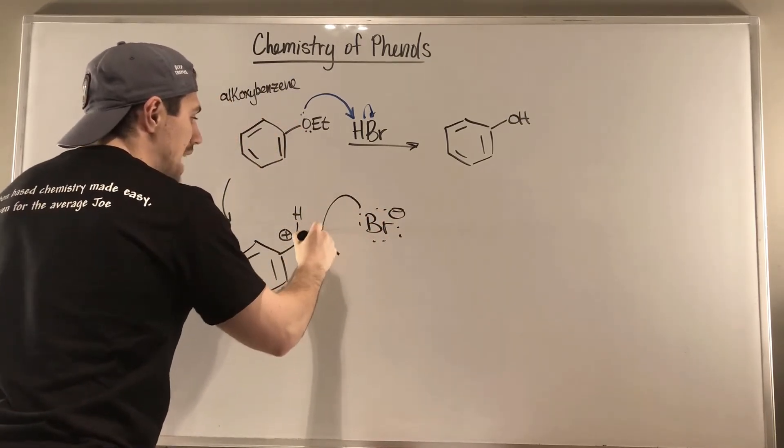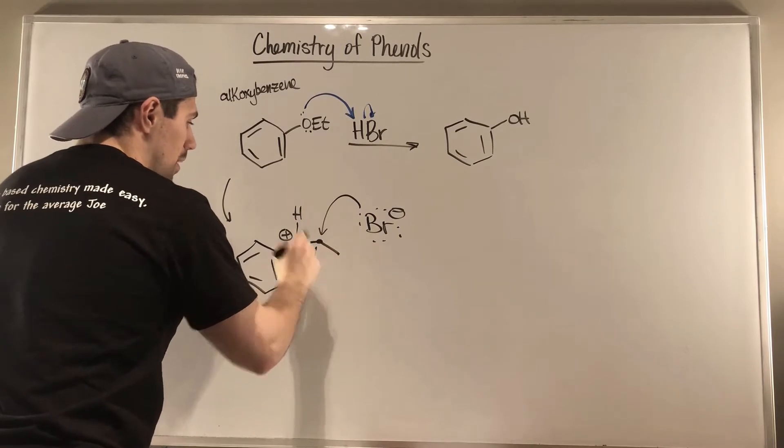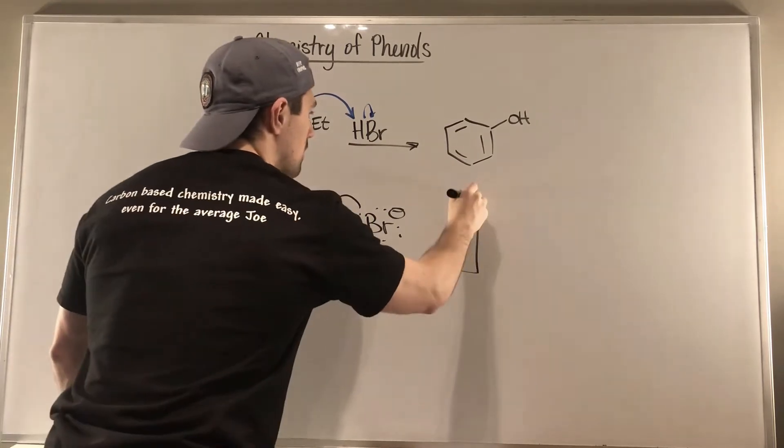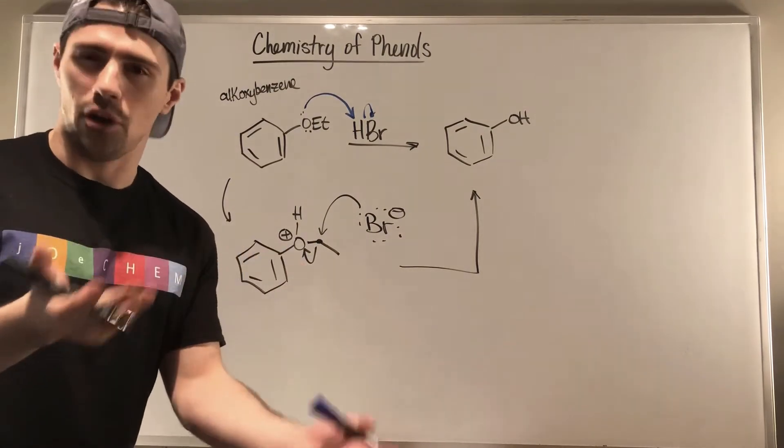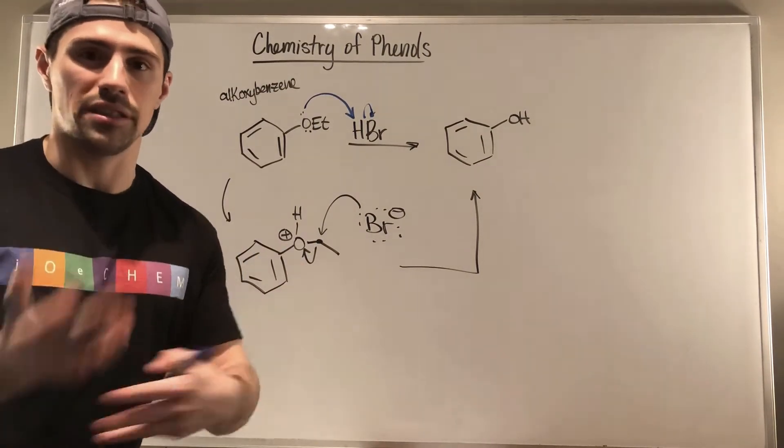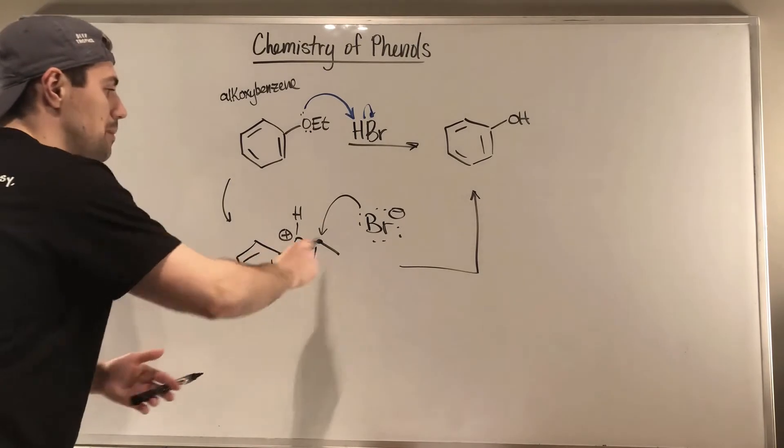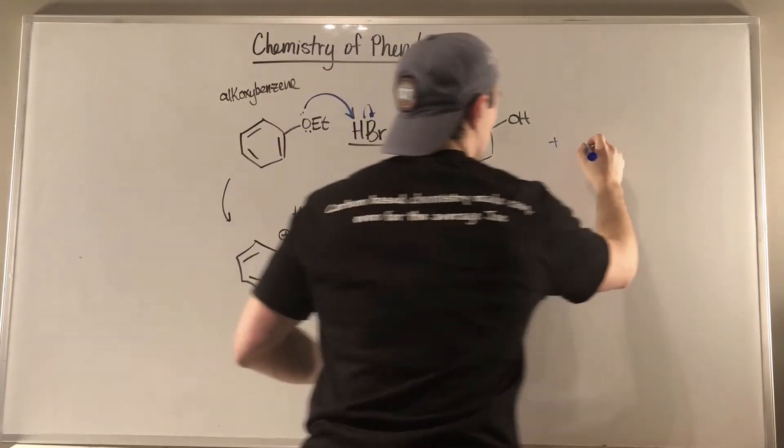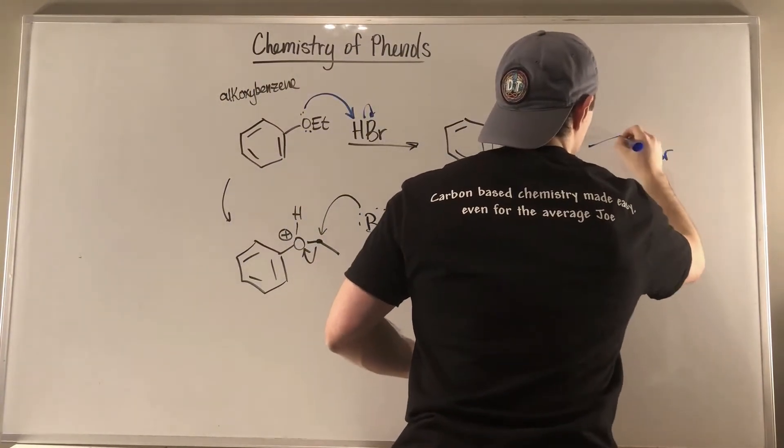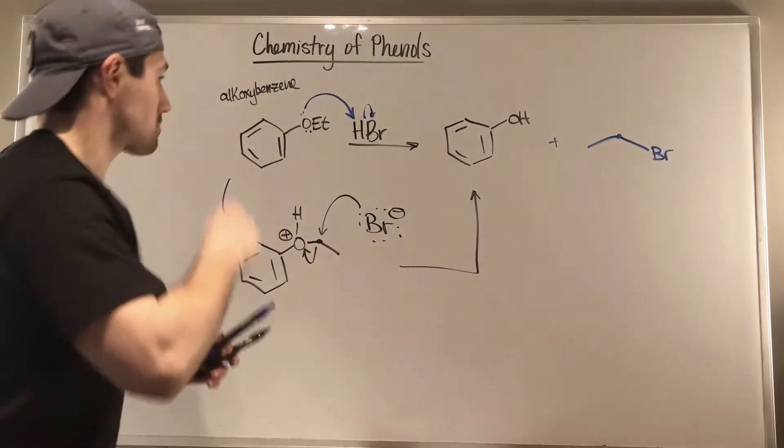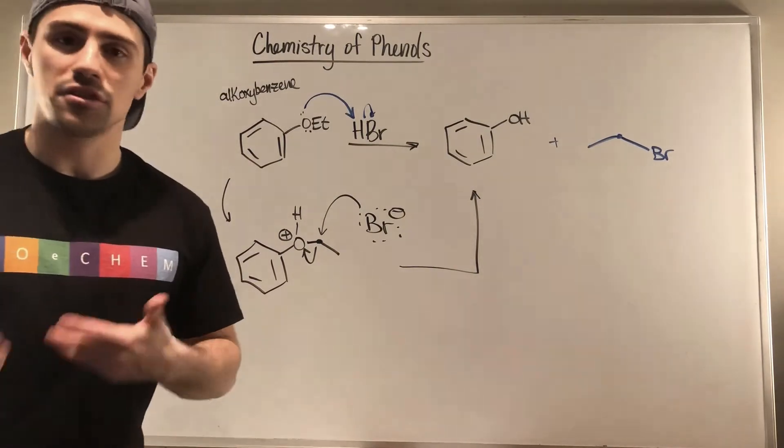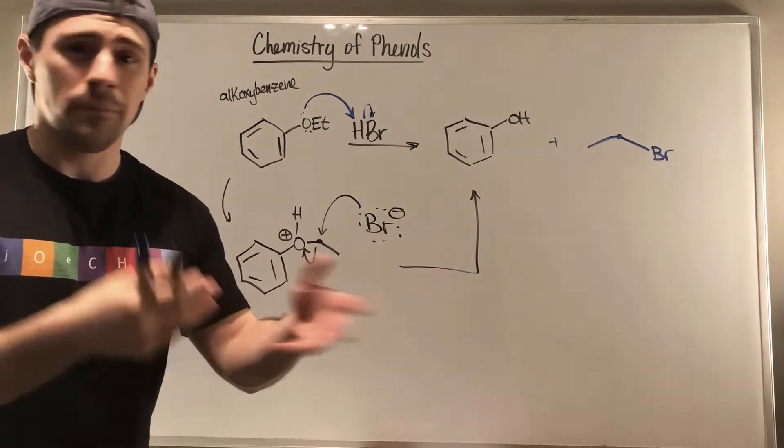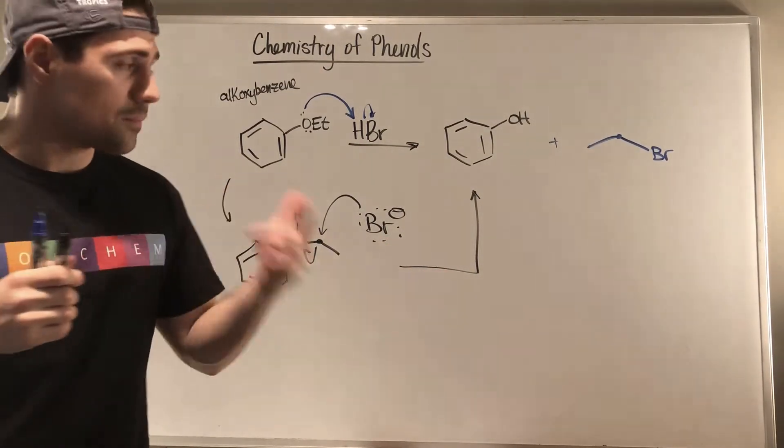It's going to be interested in this carbon. So we just attack right here, dump electrons over there. We get our phenol, which is the leaving group, which is weird. We get what we want almost because we made it into a good leaving group and got kicked off and we made ethyl bromide. So this carbon right here that I'm going to dot is this dotted carbon right there. So really cool. If you have an alkoxybenzene and for some reason you want to generate phenol, super easy to do that.